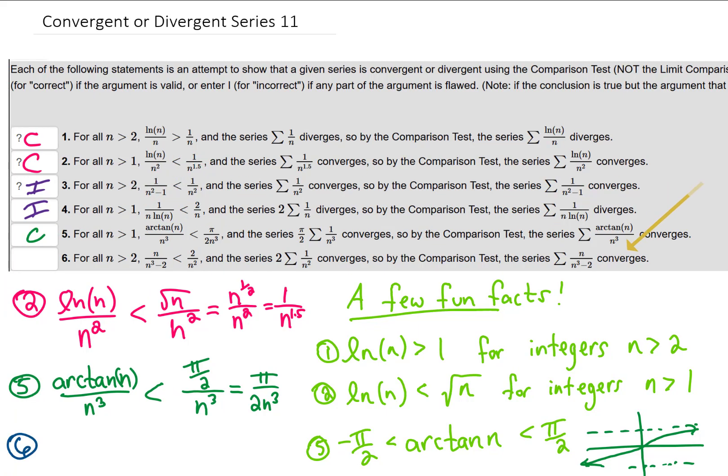For problem 6, we're trying to argue that our series converges, so we should be saying that the term in our series is less than that of some convergent series. It looks like we're trying to make that argument here, and the question is whether this inequality is actually a true statement — and that is not easy to determine.